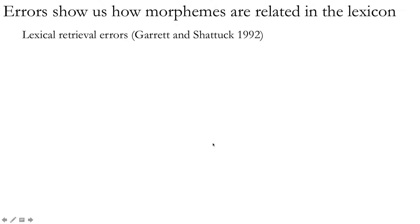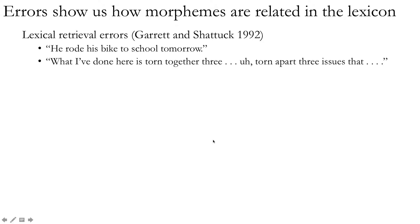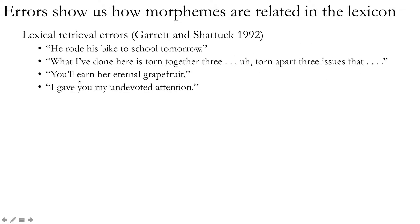There are also lexical retrieval errors — the kinds of mistakes people make when they meant to say one word and end up saying another. Something like, 'He rode his bike to school tomorrow,' when they clearly meant 'yesterday.' Yesterday and tomorrow don't sound anything like each other and their meaning is obviously not the same, but there's a strong relationship between them — so strong that it's easy to retrieve 'tomorrow' instead of 'yesterday.' Another example: 'You'll earn her eternal grapefruit' — that's obviously 'gratitude.' So again, we're storing words by their pronunciation.